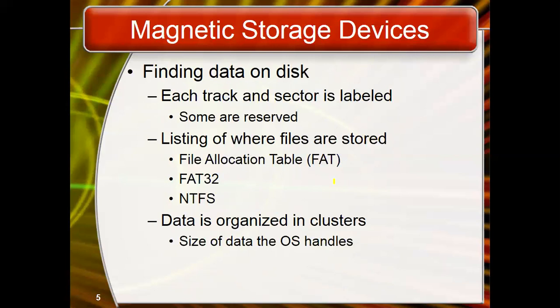FAT32 allows for a default cluster size as small as 4KB, which provides good space for storing data. Another file allocation system is NTFS — New Technology File System. It is the file system that Windows NT operating systems use for storing and retrieving files on hard disk. NTFS has several technical improvements over FAT, including improved support for metadata and advanced data structures to improve performance, reliability, and disk space use.